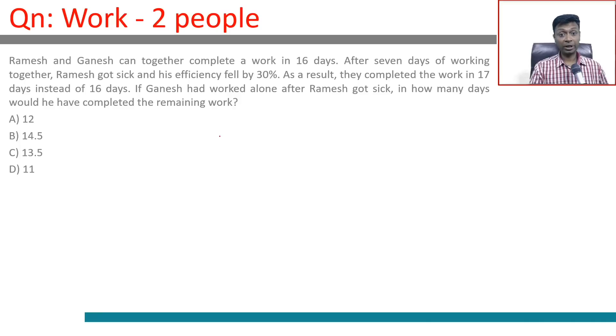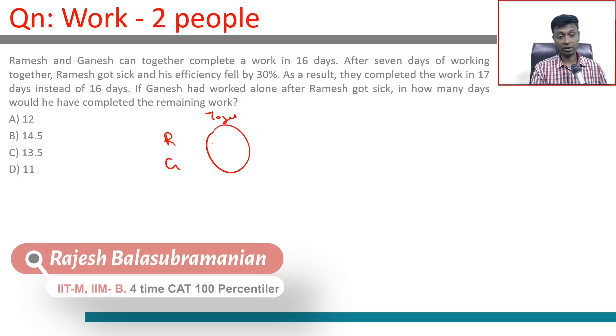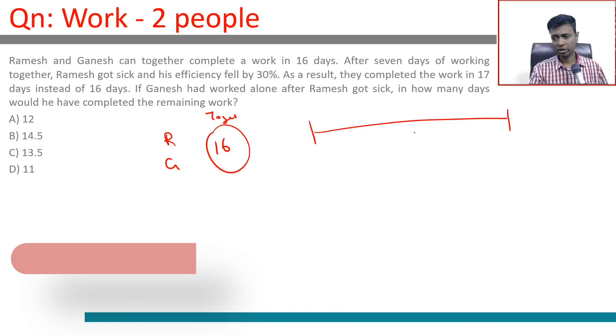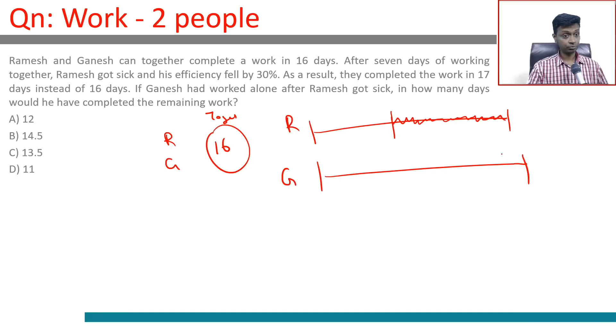Ramesh and Ganesh together can complete a work in 16 days. After seven days of working together, Ramesh got sick and his efficiency fell by 30 percent. As a result, they completed the work in 17 days instead of 16 days.